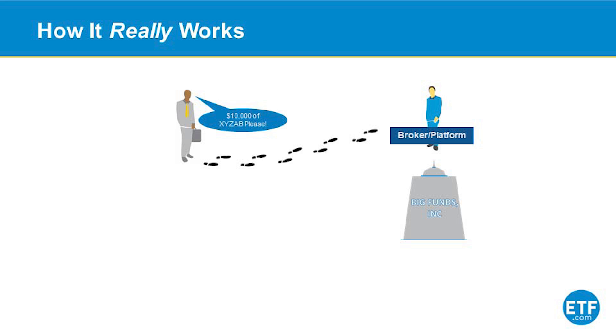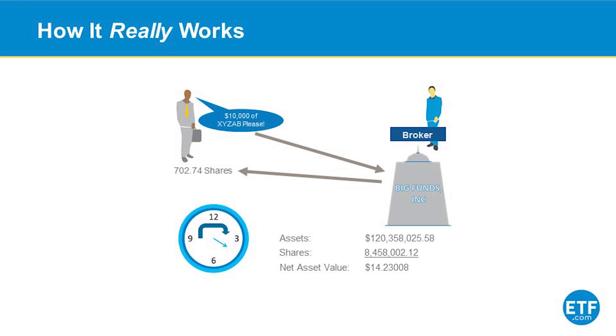Or you could go directly to the fund company and say, I would like $10,000 worth of XYZAB. The first thing that happens is nothing, because no transactions happen in a mutual fund until after the close. But at the close, the fund does a little math. They take all of the assets they have, they divide that by all of the shares that currently exist, and they come up with a net asset value — a value per share. And then they let you buy at that price. They'll take your $10,000, give you your 700 shares and change, and tomorrow morning they'll put that money to work buying stocks and bonds or whatever the mandate for that fund is.